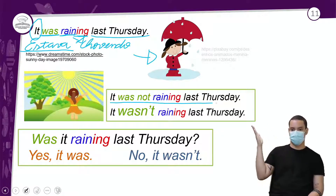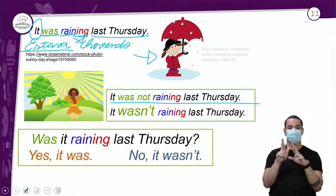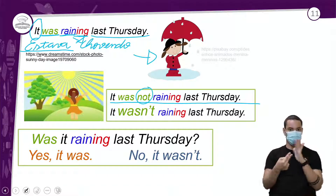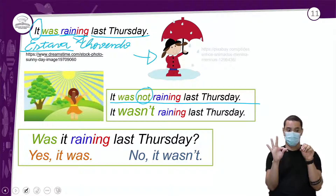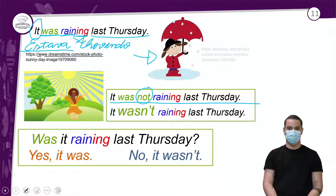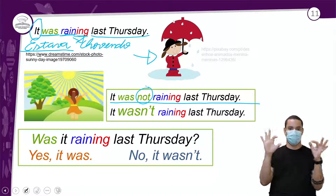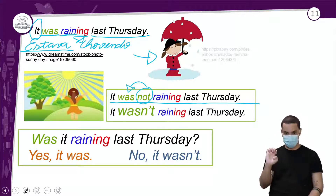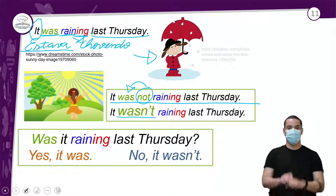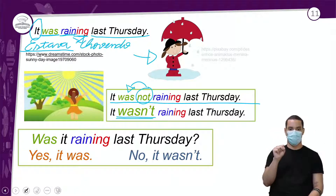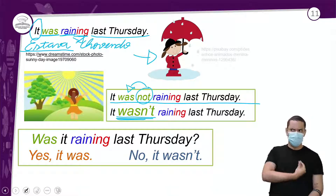Para a negação: 'It was not raining last Thursday'. A diferença é a presença do 'not'. Esse 'not' vem do lado do verbo to be e pode contrair: 'was not' é a mesma coisa que 'wasn't'. 'It wasn't raining last Thursday' — não estava chovendo na quinta passada.